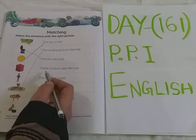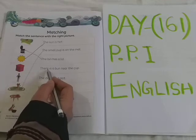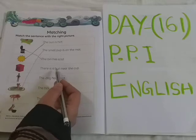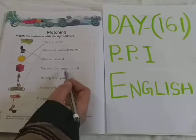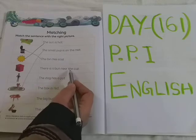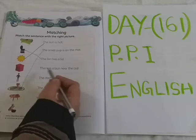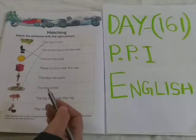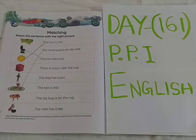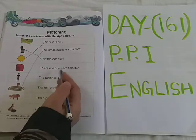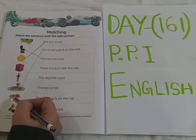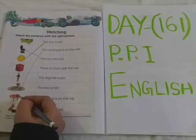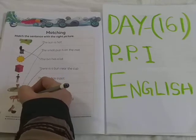See the next sentence now. T-H-E-R-E — There. I-S — Is. A. B-U-N — Bun. There is a bun. N-E-A-R — Near. T-H-E — The. C-U-P — Cup. There is a bun near the cup. Where is the picture? See — bun and cup. Which is near? There is a bun near the cup. Yes, you can see the bun is near this cup. So this sentence matches with the picture. Match it.